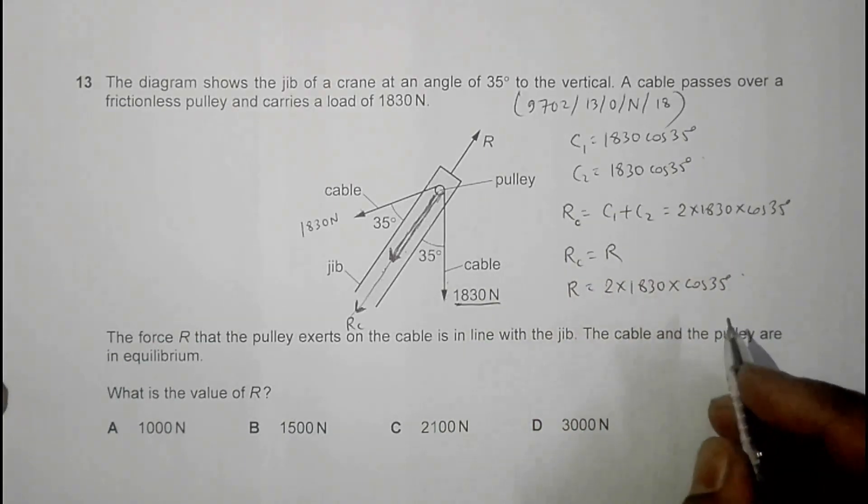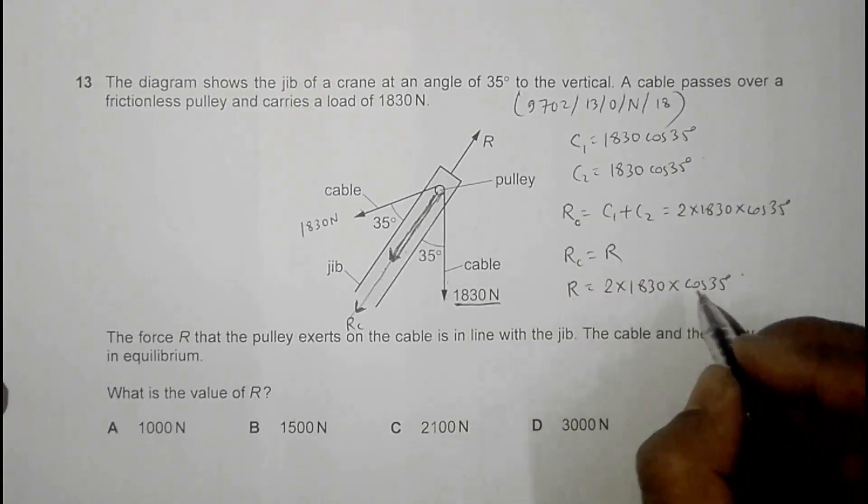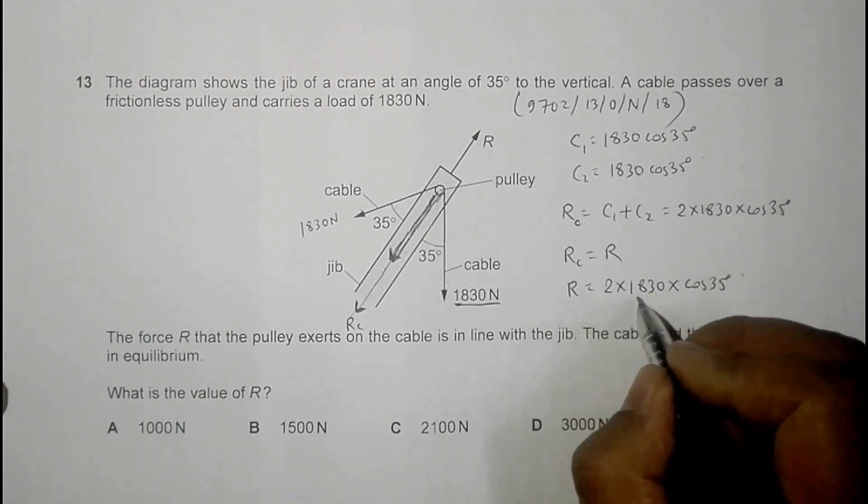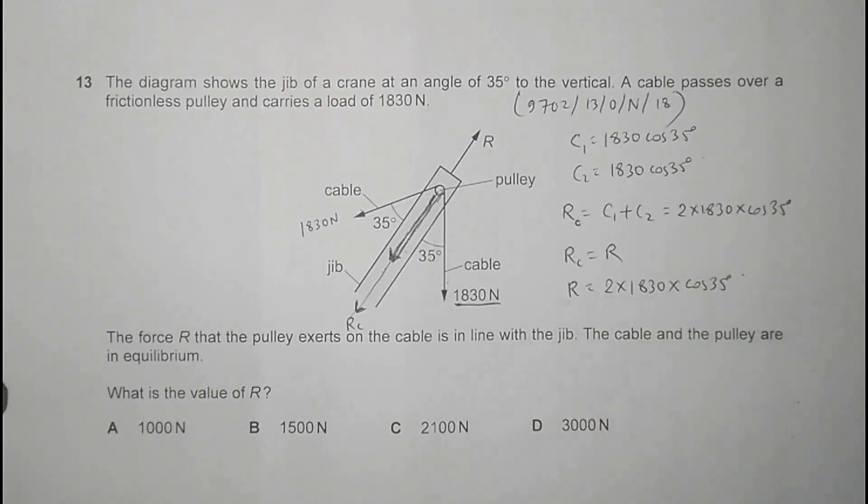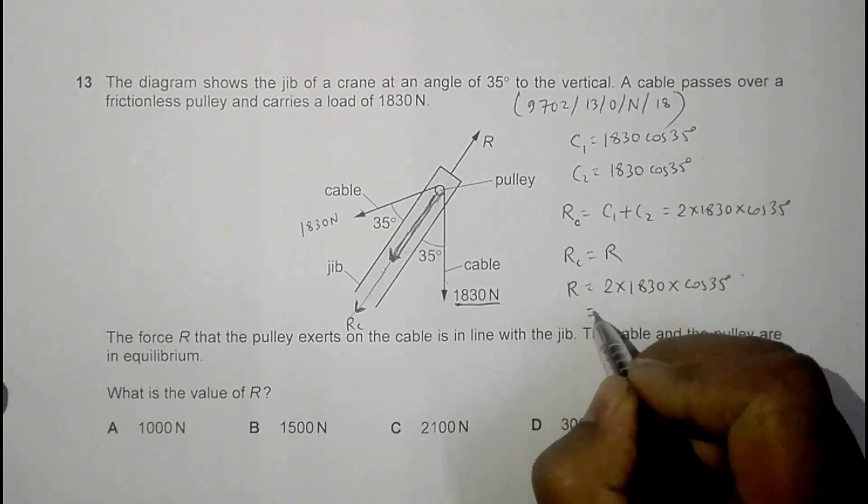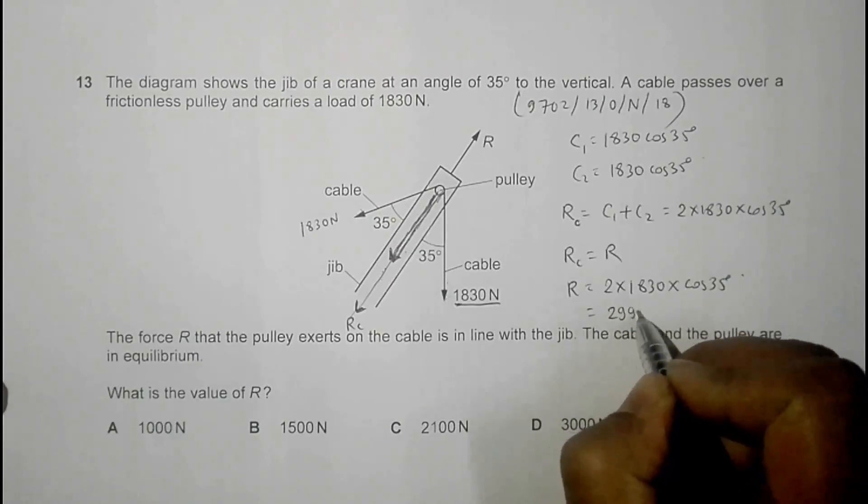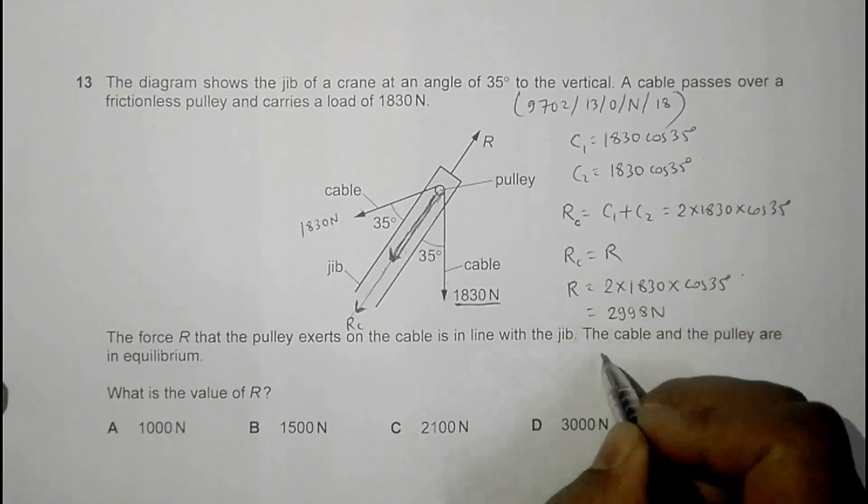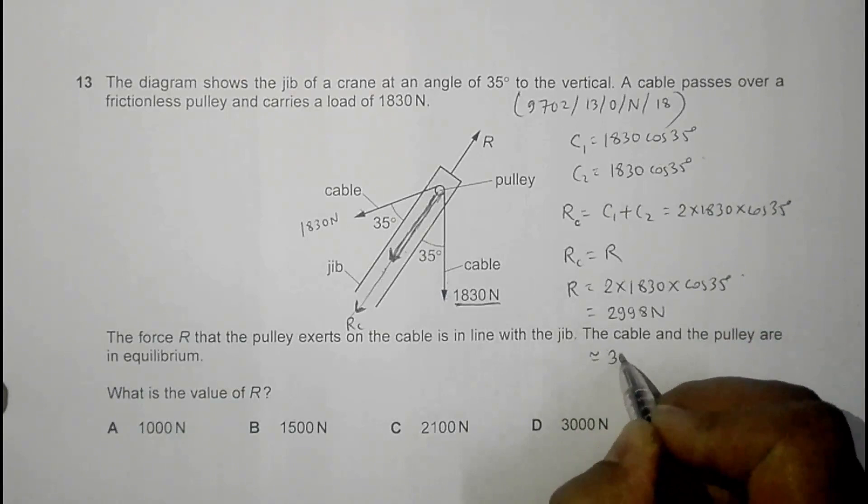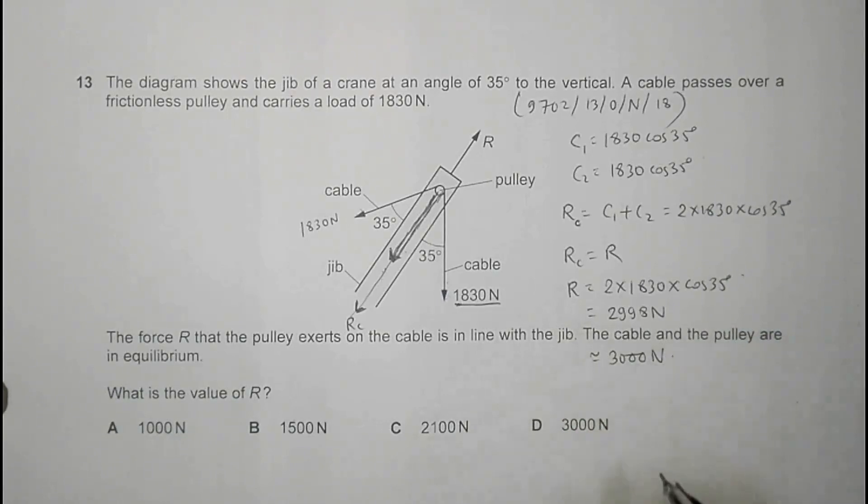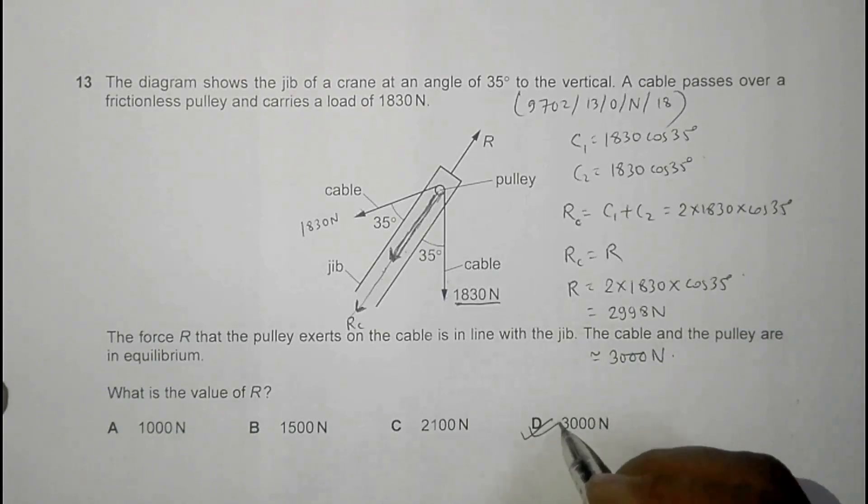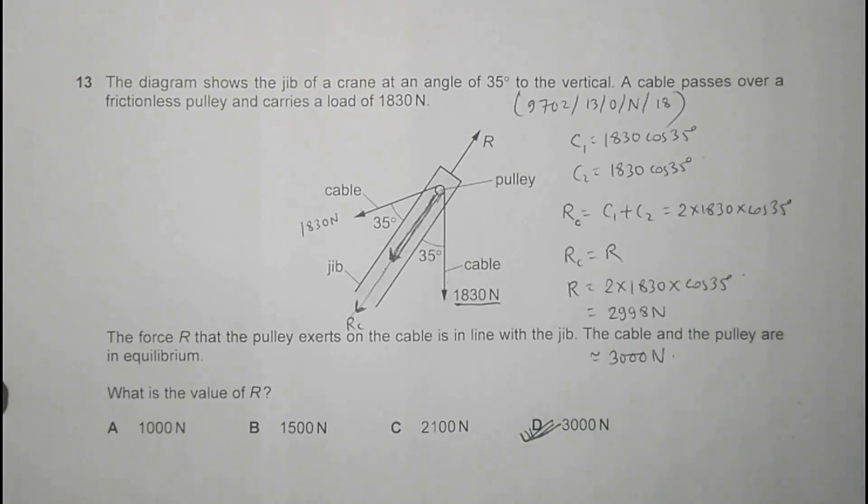If I do the calculation here, 2 times 1830 times cos 35, this thing comes out to be equal to about 2998 Newton, which is nearly equal to 3000 Newton, and the answer is choice number D. So choice D is the correct answer.